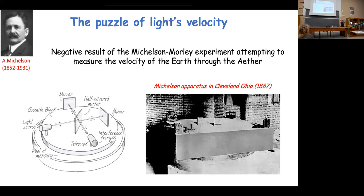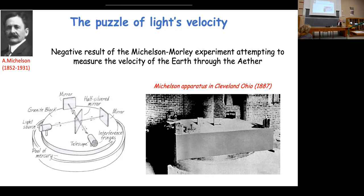Michelson asked himself a very simple question: is it possible to observe the velocity of the Earth in the ether? The ether was a medium supposed to carry light and all electromagnetic waves, filling the entire universe — since we receive light from stars and the universe as a whole. It was supposed that as the Earth moved through the ether, the apparent velocity of light should change depending on the relative direction of the Earth's motion and the light.